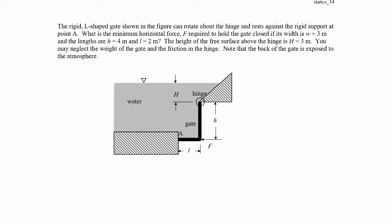In this example, we have a rigid L-shaped gate that is hinged at a point and can rotate about that hinge. We're given the geometry: the gate is located at a distance capital H from the free surface, the gate height is little h, the gate length is little l, and there's a force being applied to hold the gate in place. The water acts to push the gate to rotate about the hinge, and we have to apply a force to keep it from rotating. We need to find the force required to hold the gate in place.